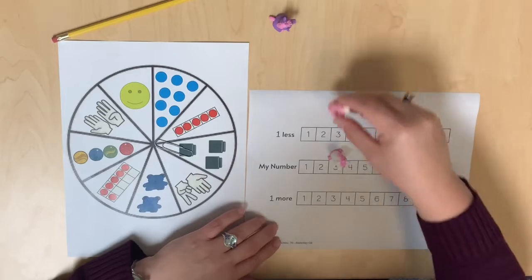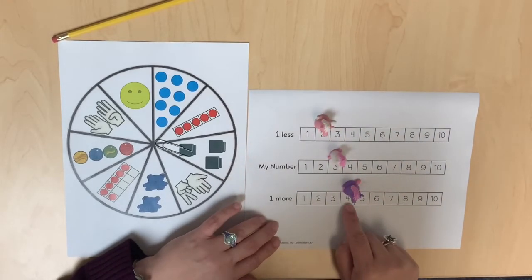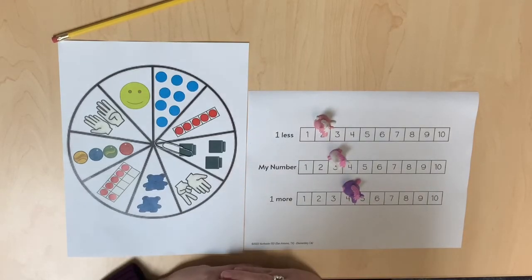Then, using additional counters, students can identify a number that is one more than and one less than three. Quantities can be presented to students using concrete models, pictorial models, oral presentations, and numerals.